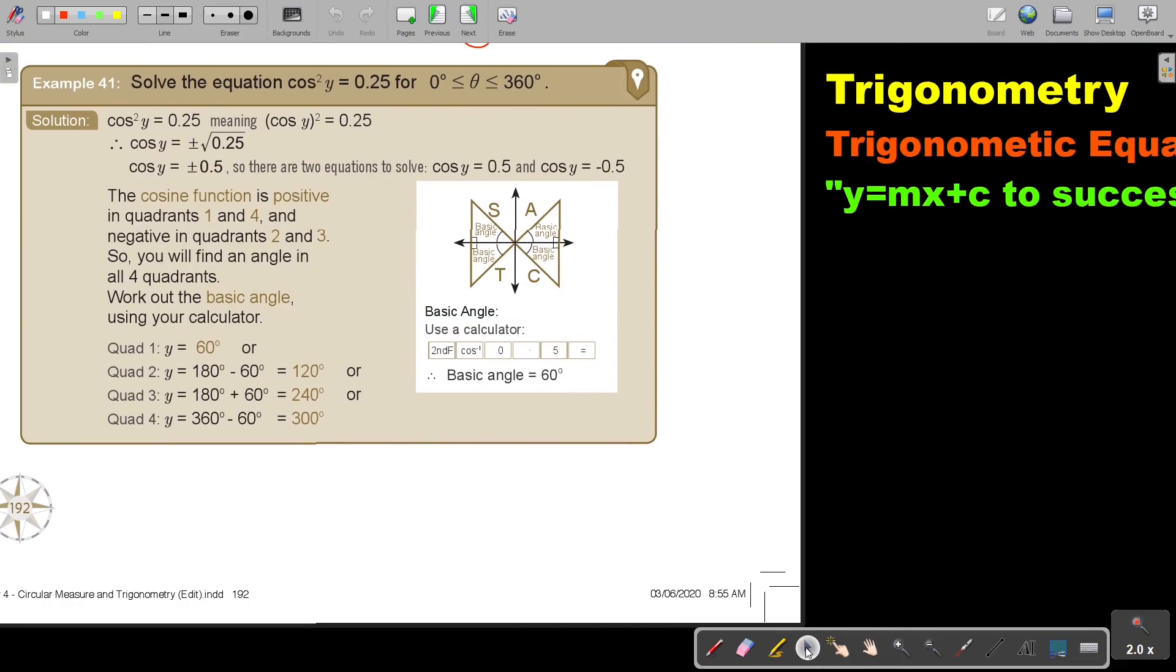If I say cos²y equals 0.25, meaning it's squared, I must get rid of that square by taking the square root on the other side. But the square root will always have a positive and a negative option, so plus minus 0.5 after I work it out. There are two equations to solve, the positive one as well as the negative one.